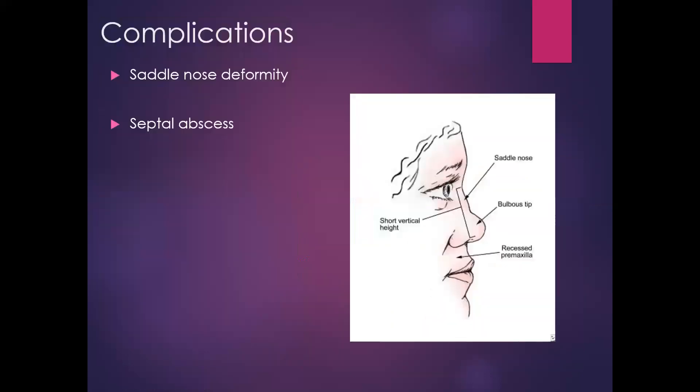The bottom right picture depicts an incision and drainage and then packing of the nose. Complications if not urgently drained include ischaemia and necrosis of the septal cartilage, which can result in a saddle nose deformity as shown in the picture. If not drained quickly enough, it can also develop into a septal abscess. So it's important to recognise anyone presenting with a possible septal haematoma and manage appropriately.